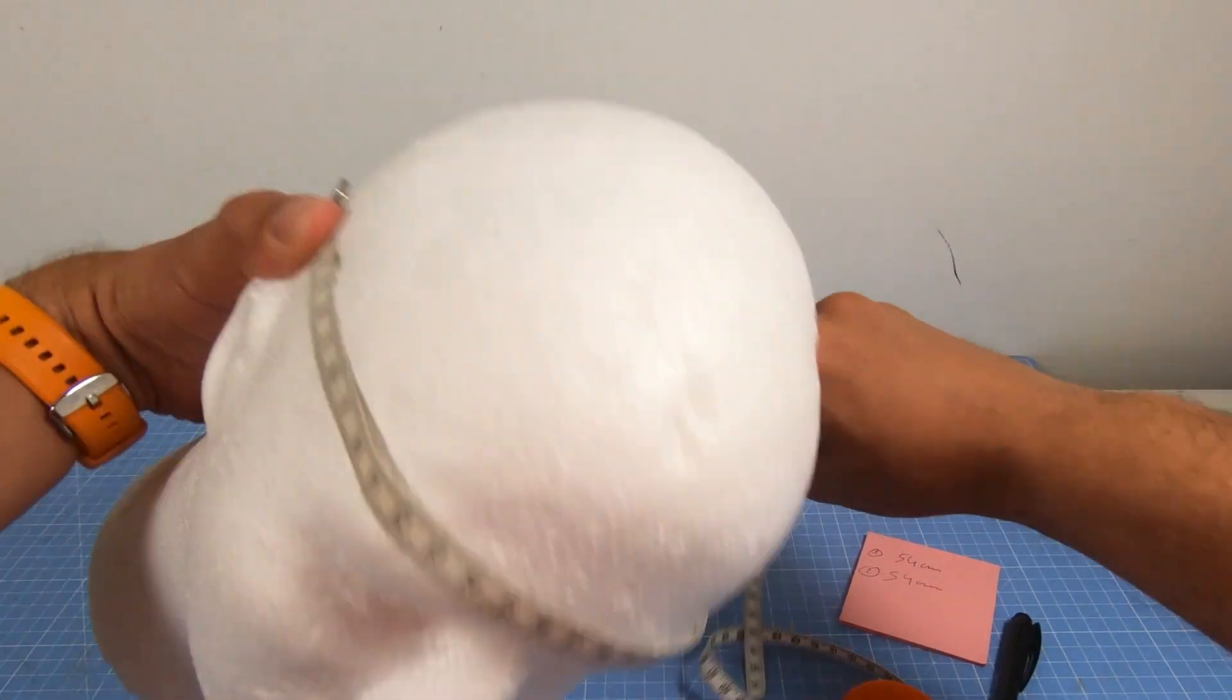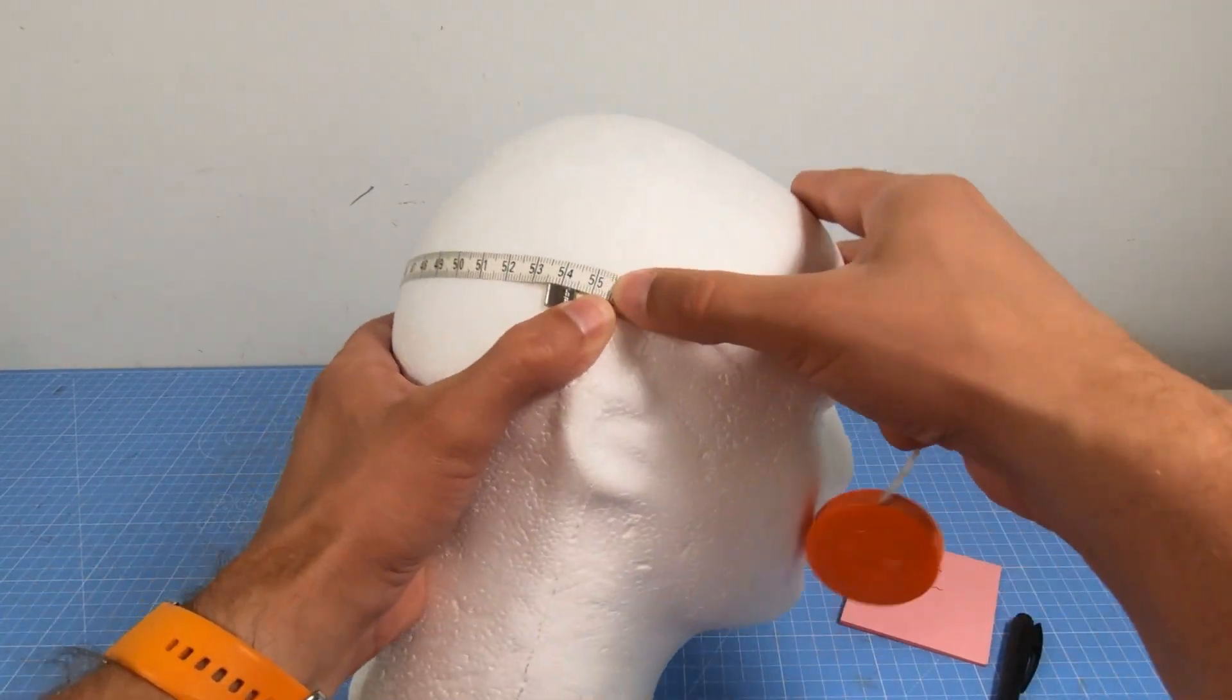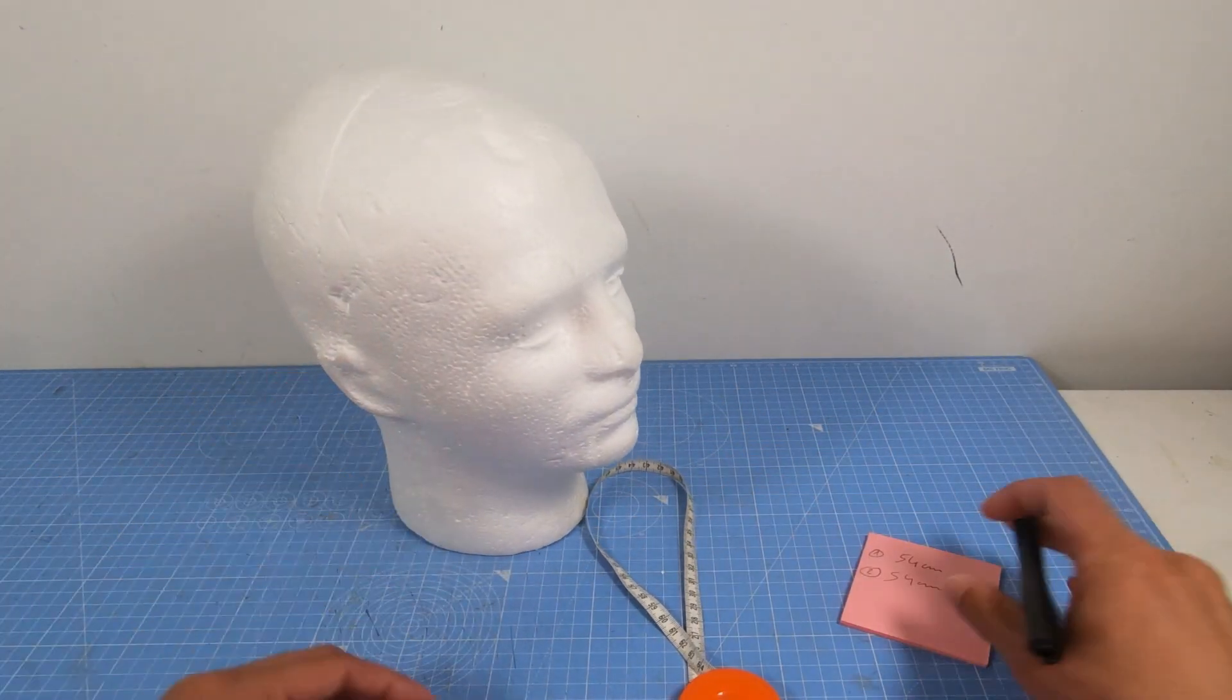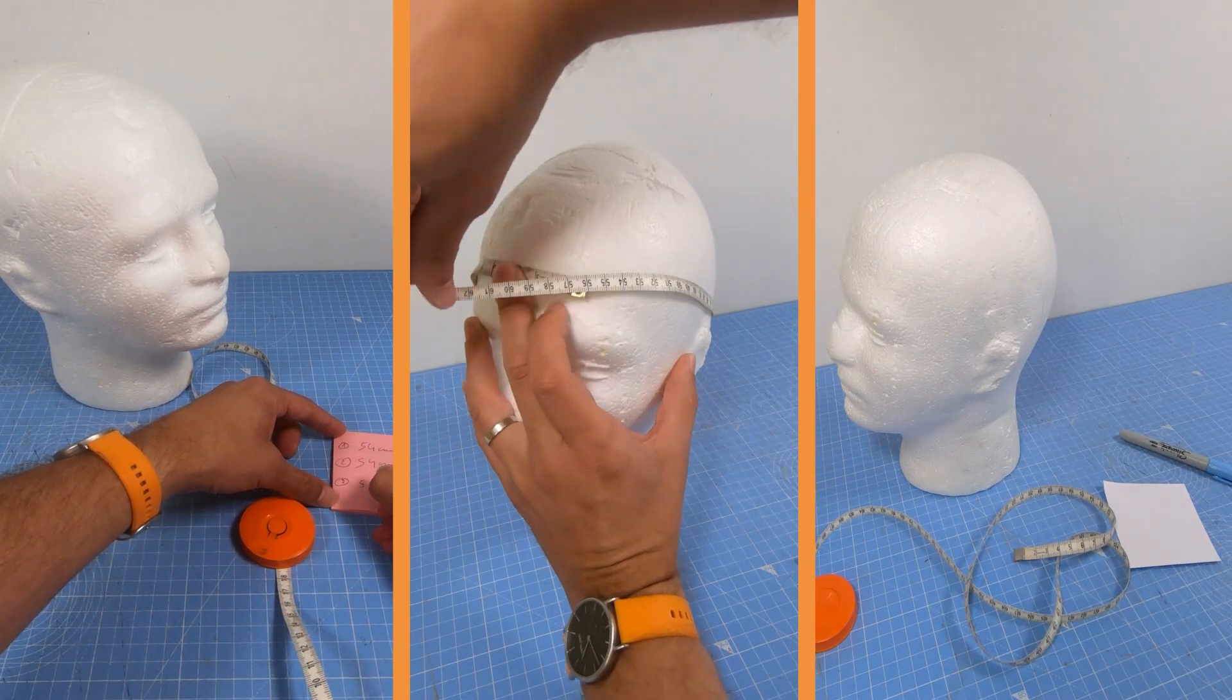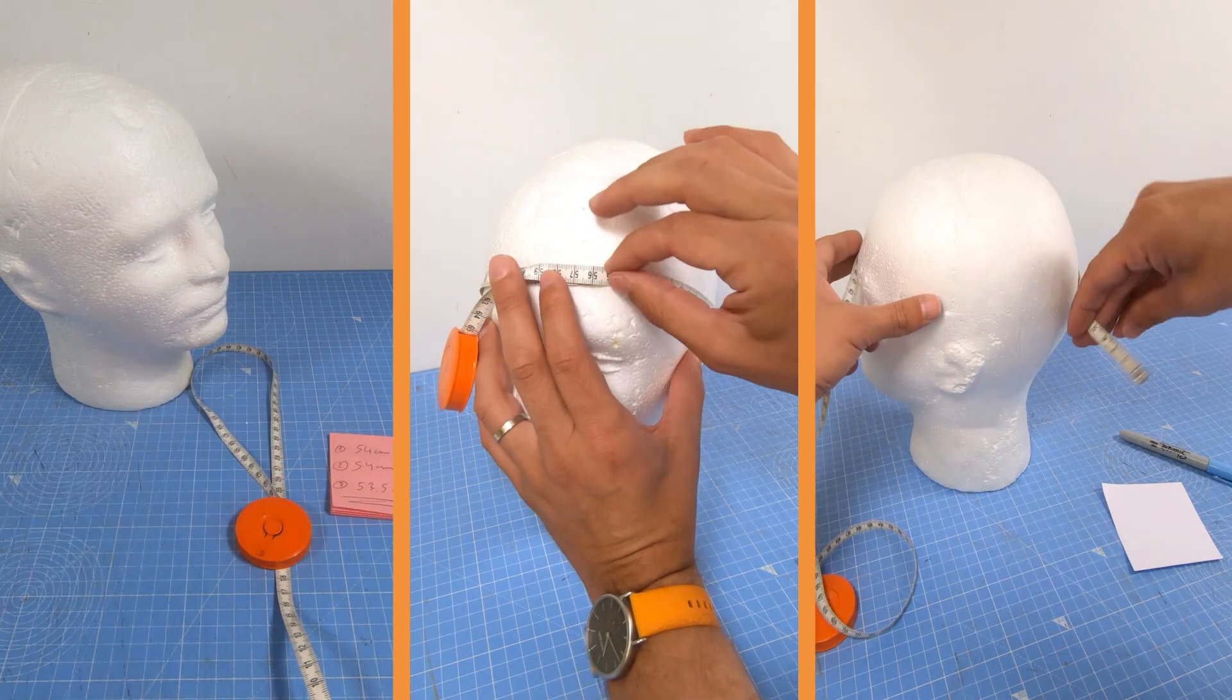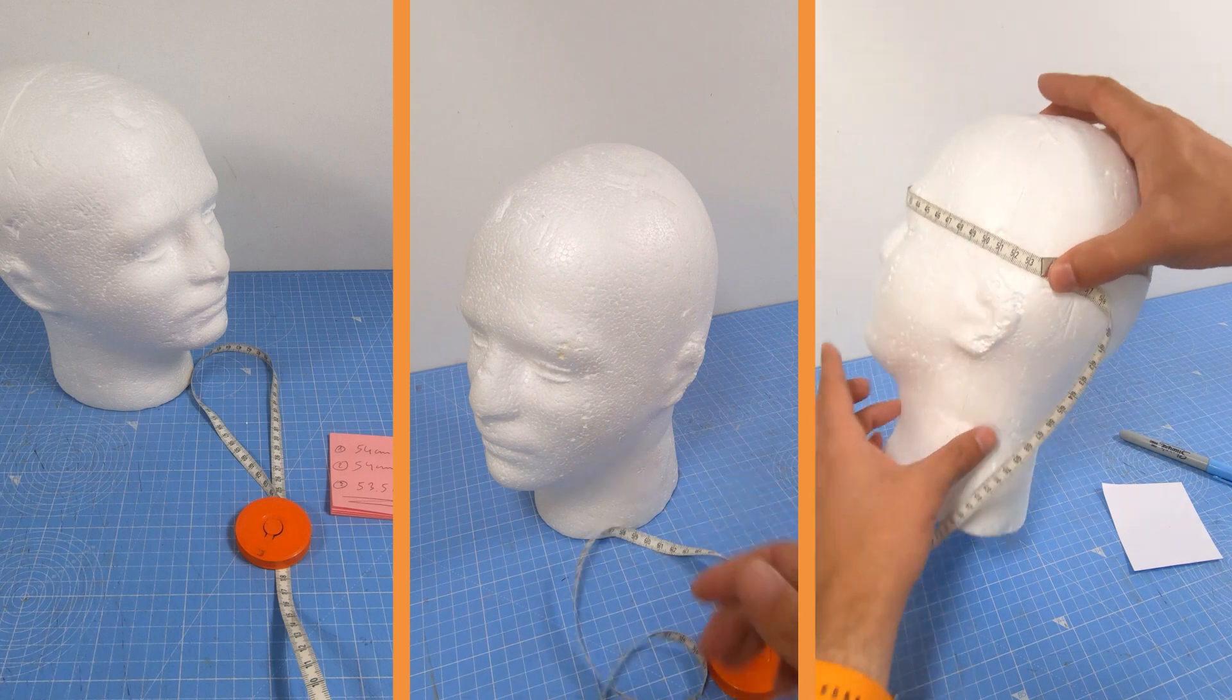Place the measuring tape just above your eyebrows and ears and wrap it around the widest part of your head. Note where the tape overlaps and write down the measurement in centimeters or inches. To ensure accuracy, repeat the same steps at least three times. Calculate the average value and now you know your head size.